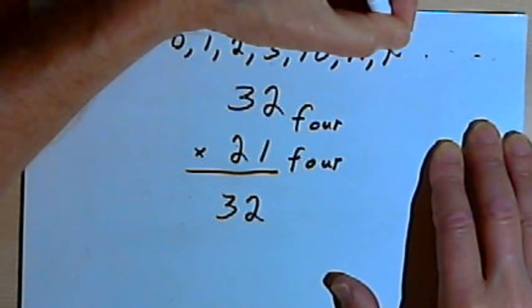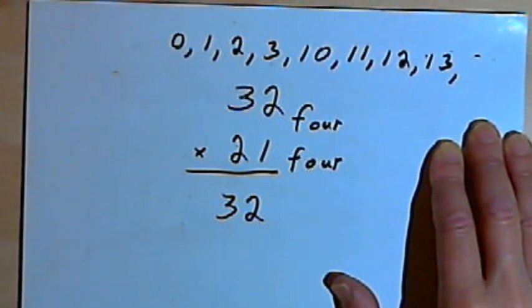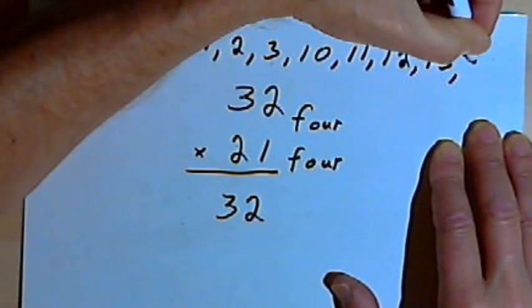So after I use up my digits, I'm going to have to go into the next column and I'll have 10, then 11, 12, 13. I can't say 14 because there is no 4. So that's going to get me over to 20.